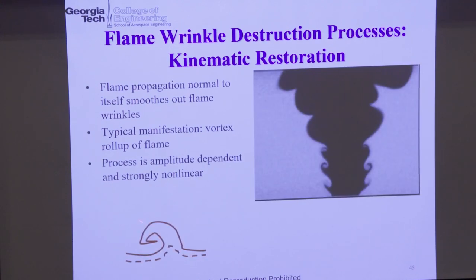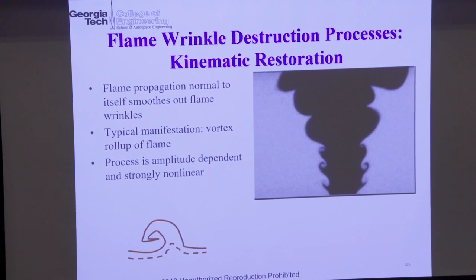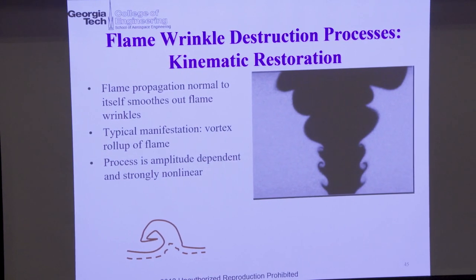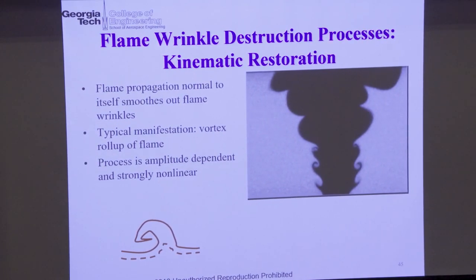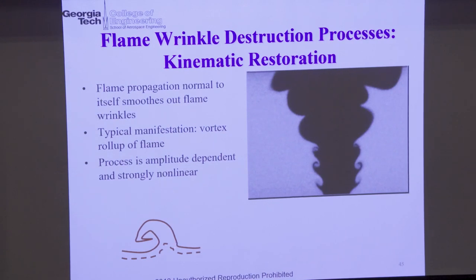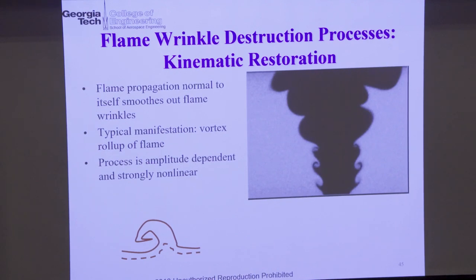Just a little sketch illustrating: if this is reactants, the flame will not stay wrinkled indefinitely — this branch is propagating one way, that branch the other way. If that's a distance L, after a time L divided by SL, that wrinkle will be gone. Given enough time, that feature will be smoothed out.